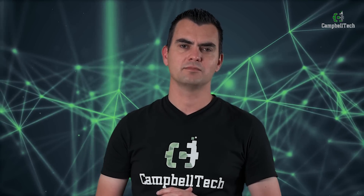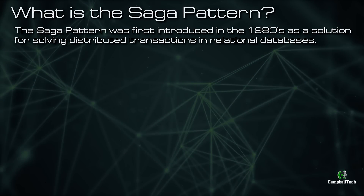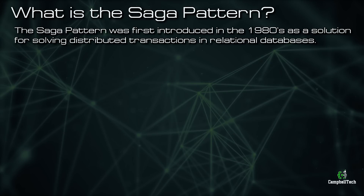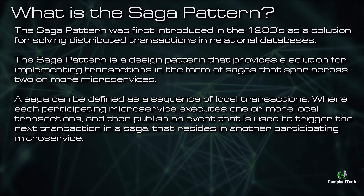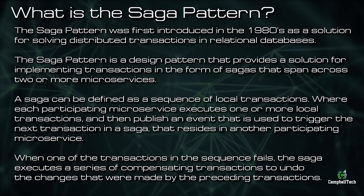The saga pattern was first introduced in the 1980s as a solution for solving distributed transactions in relational databases. The saga pattern is a design pattern that provides a solution for implementing transactions in the form of sagas that span across two or more microservices. A saga can be defined as a sequence of local transactions, where each participating microservice executes one or more local transactions and then publishes an event that triggers the next transaction in a saga residing in another participating microservice. When one of the transactions in the sequence fails, the saga executes a series of compensating transactions to undo the changes made by the preceding transactions.